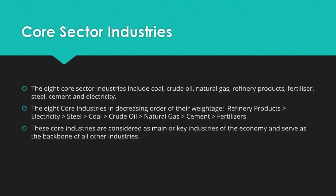fertilizers, steel, cement, and electricity. When arranged in decreasing order of their weightage, they are: first, refinery products; then electricity; then steel; then coal; then crude oil; then natural gas and cement;